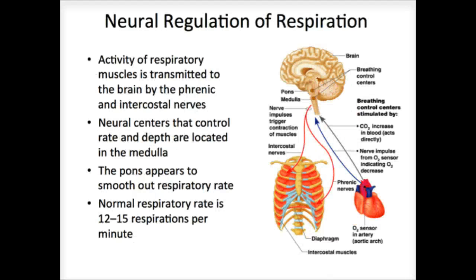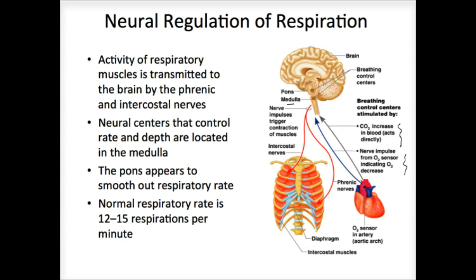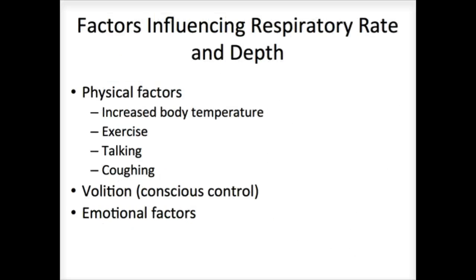Lastly, in terms of controls, we have neural controls. There are a couple of areas of the brain directly responsible for control of respiration: the medulla oblongata and the pons. Remember, the medulla is responsible for survival mechanisms that the body needs to stay alive. You can see that changes in CO2 are monitored within the medulla. We can also monitor the amounts of oxygen — we have actual chemoreceptors or chemosensors within different parts of the body that help to control that.